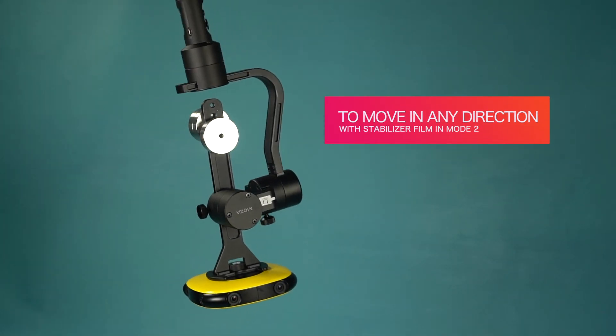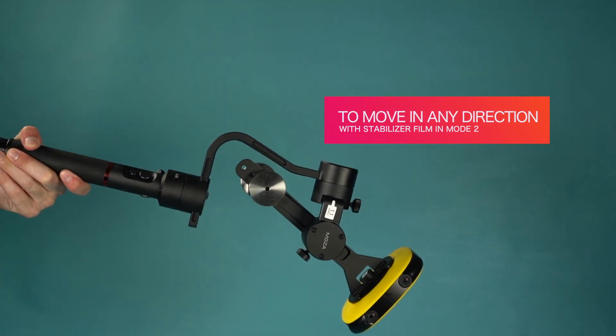To freely move the stabilizer in almost any direction, try filming in mode 2.